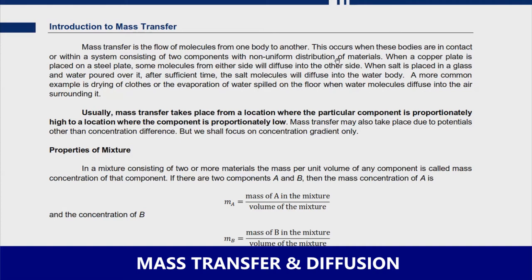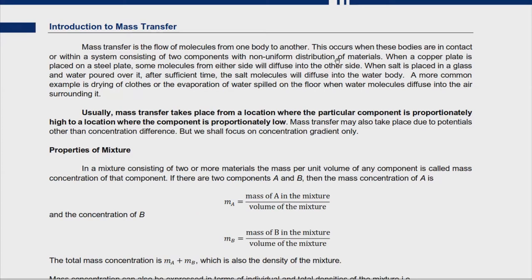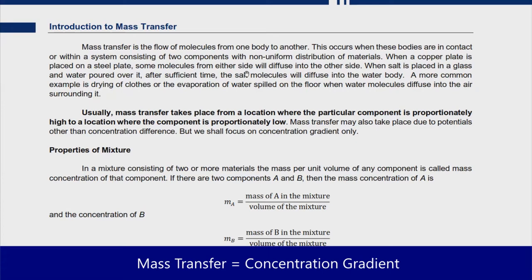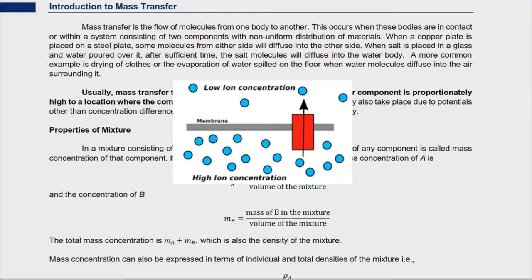In today's video we'll be discussing mass transfer and all the unit operations that involve this kind of transfer. Mass transfer is another type of movement of molecules driven by what we call the concentration gradient. It is the flow of molecules from one body to another — a phenomenon wherein it takes place from a location where the component is proportionately high and moves to a region where the component is proportionately low.